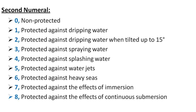The second numeral indicates protection against water penetration. When it is zero, it is non-protected — a device with IP_0 as the second digit has no protection against water and cannot be used for outdoor applications. One indicates protection against dripping water in the vertical direction.